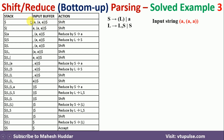Since we don't have anything on the stack, we cannot perform any operations or apply any rules. So we shift the first token, opening parenthesis, onto the stack. The remaining input is written as-is. With only opening parenthesis on the stack, we still cannot apply any rule, so we shift the next token A. Now A on the stack top can be reduced to S, so the action is reduce S→A.